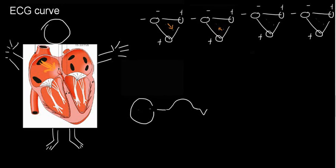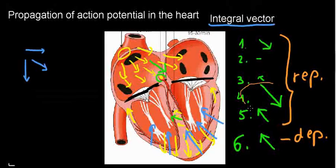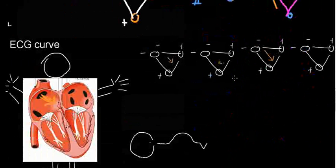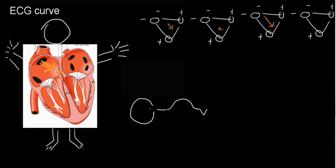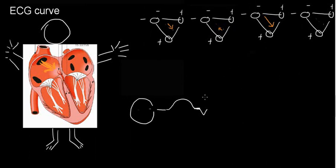Next is the very dramatic event of the depolarization of the ventricles. The AV node didn't give us much measurement, which is why we have some distance between this wave and the next — a little bit of a silence point. That is what the AV node gives us.